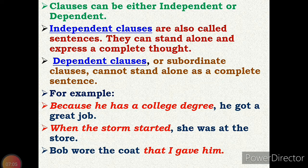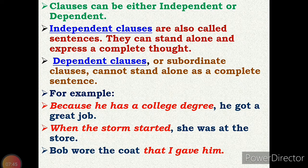A dependent clause is also called a subordinate clause. Now let's see some examples: 'Because he has a college degree, he got a great job.' 'When the storm started, she was at the store.' 'Bob wore the coat that I gave him.' In these sentences, the parts in red use conjunctions — because, when, that — showing they depend on another clause.